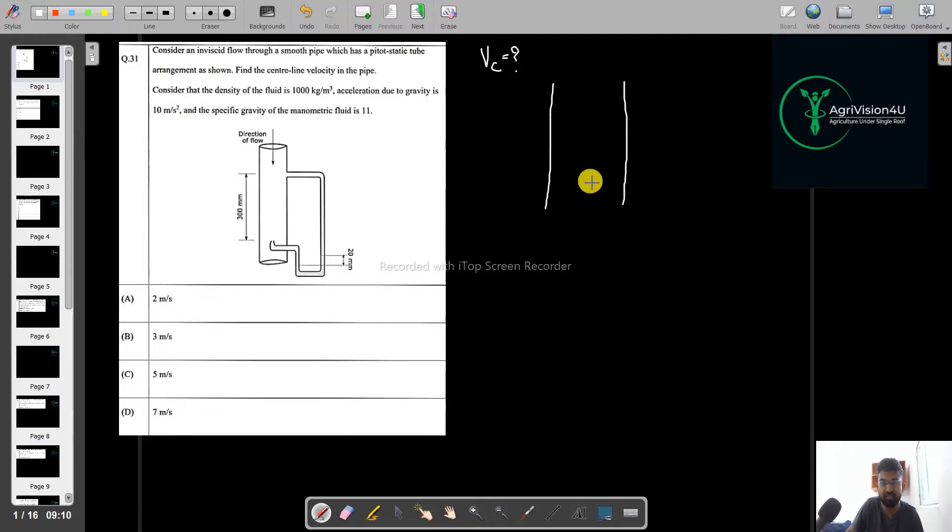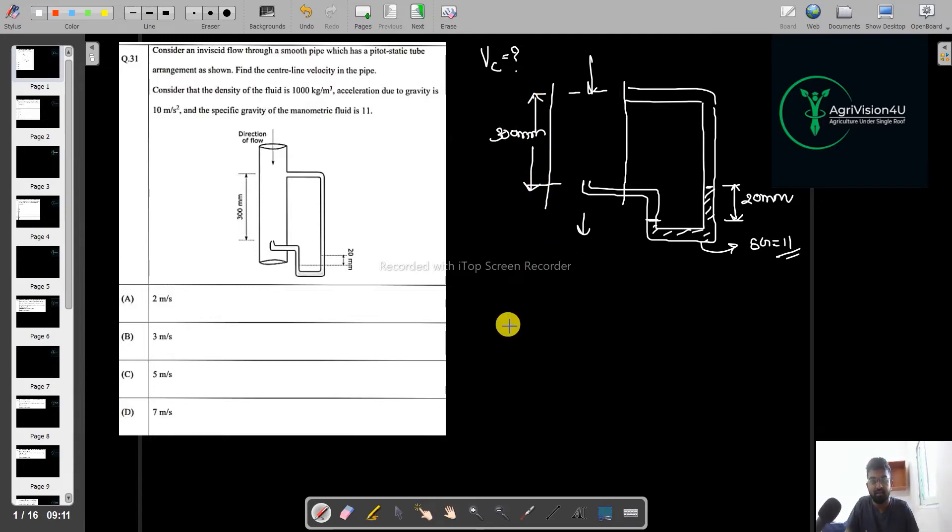So this is the given arrangement of the pipe and in this here they have given the arrangement like this, they have given the manometric fluid, 20 mm, gravity is given as 11. This is the direction of flow. 300 mm.